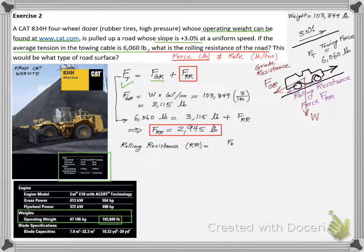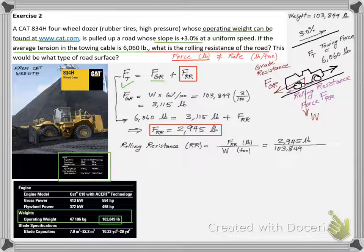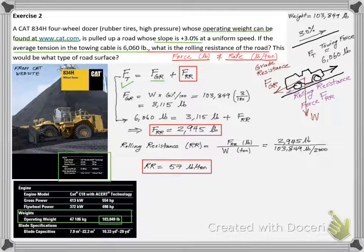The rolling resistance rate, RR, is basically the ratio between FRR and the machine weight, W, which we find it to be 57 pounds of rolling resistance force per each ton of weight.